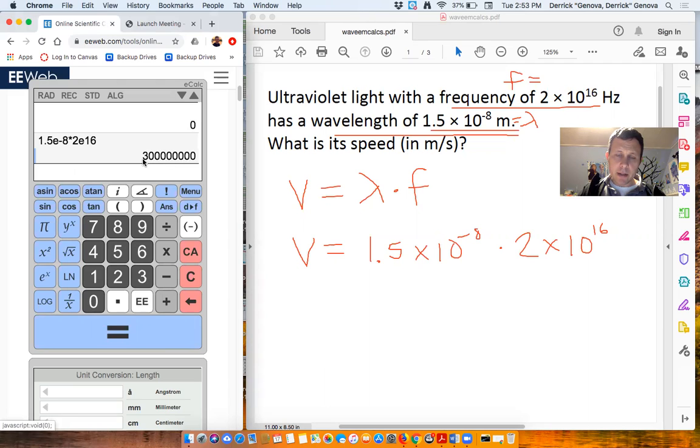And a lot of times it's going to give you your answer in standard formation. So if you see here, std means standard. If I click that until it hits psi, now it's in scientific notation. So this means 3e8 means 3 times 10 to the 8th. So the velocity of the UV light is 3 times 10 to the 8th meters per second.